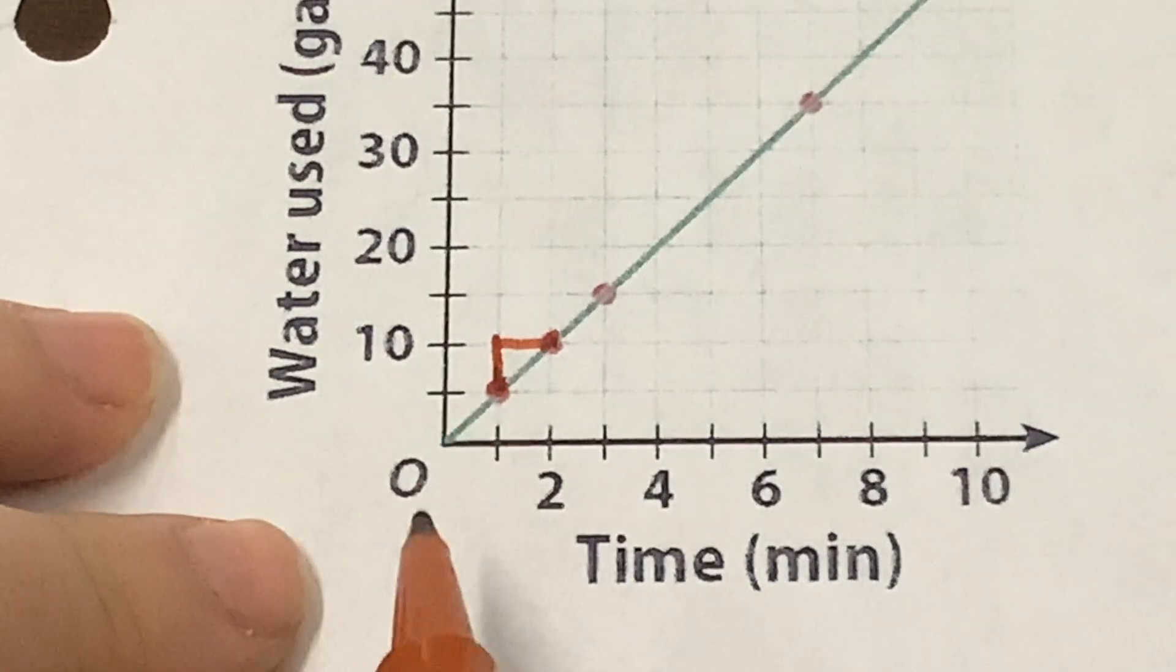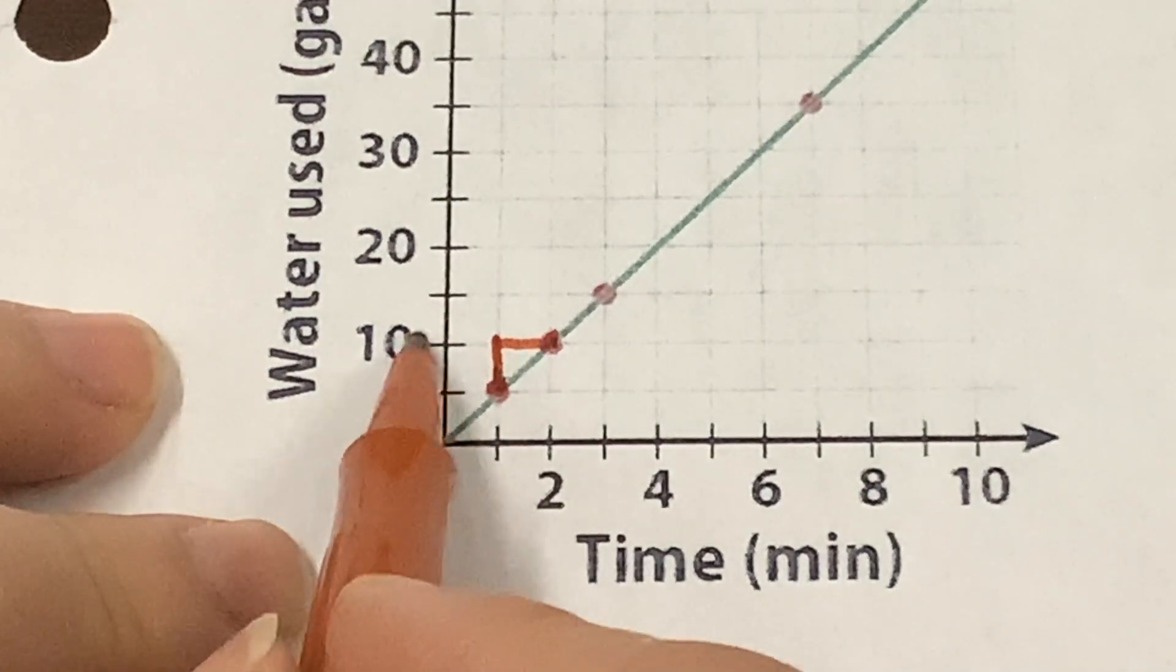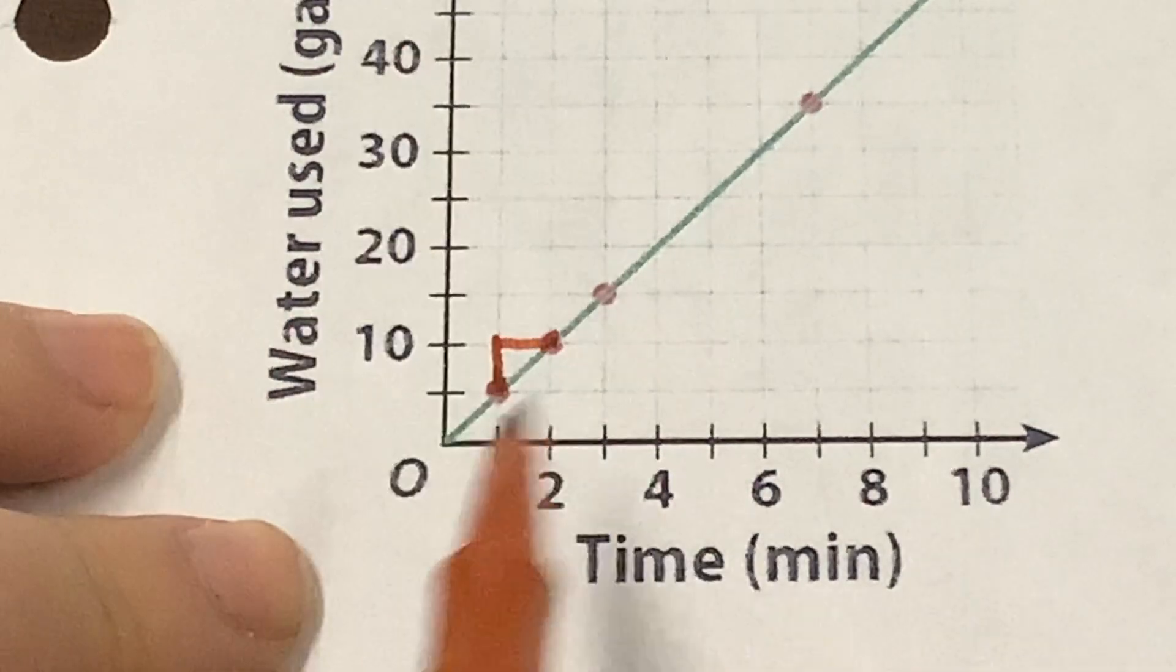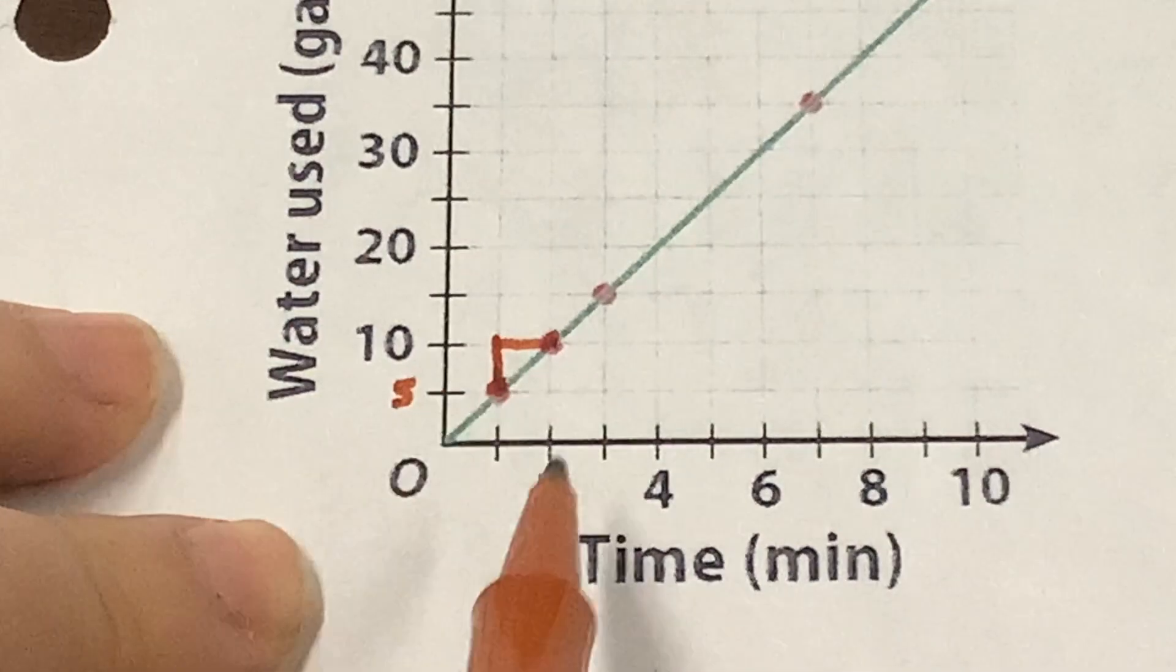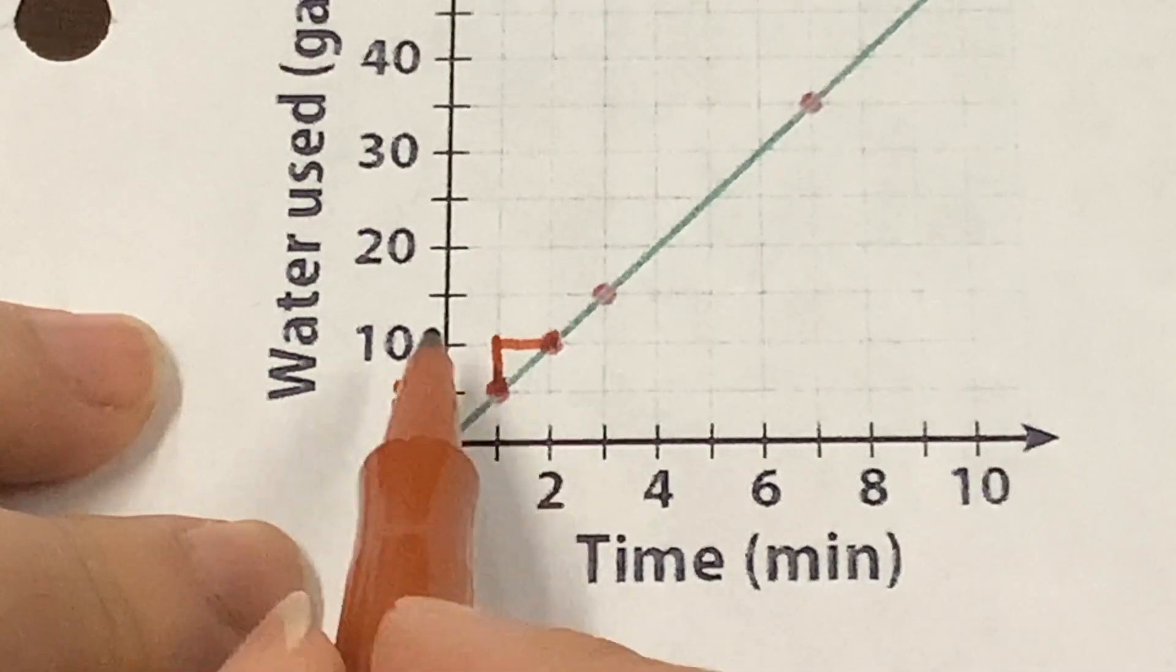Now, you might be wondering, well, where did he get five from? So they labeled every tenth interval. But halfway in between 0 and 10 is what? Five. Five. So really, those hash marks are intervals of five.